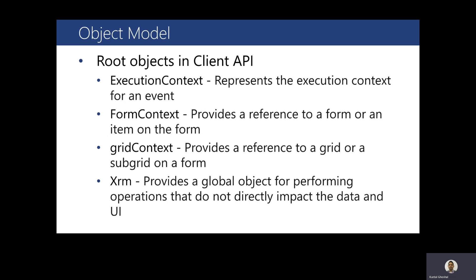It is important to understand the model-driven apps client API object model to effectively write JavaScript code in Dynamics 365 Customer Engagement. Remember to select 'Pass execution context as first parameter' in the event handler properties when defining against a form context object. Use of the Xrm.Page object as a static access to the primary form context is still supported, but it is deprecated. We recommend using the Form Context object instead of Xrm.Page for any new development, and you should plan to migrate existing code from Xrm.Page to Form Context.